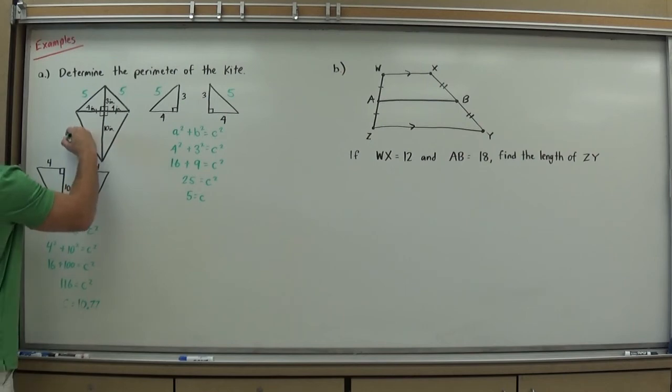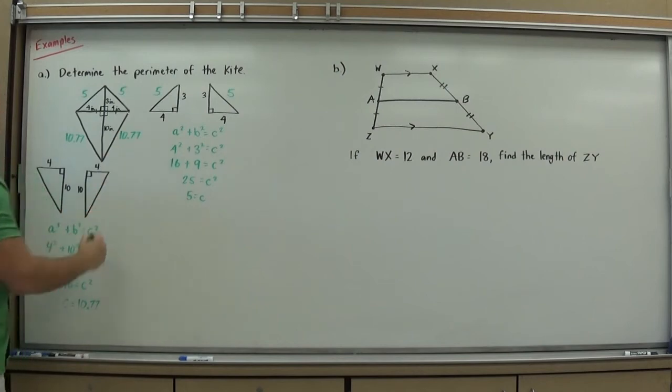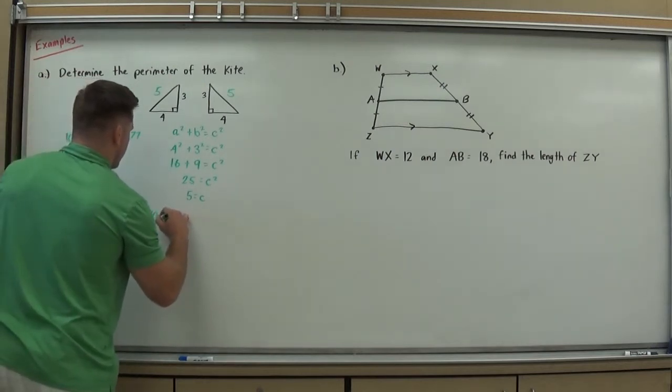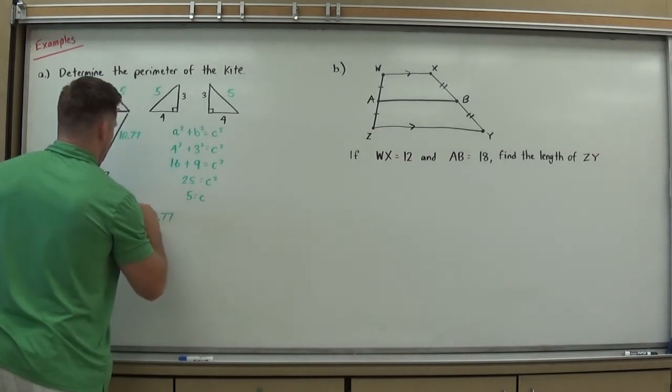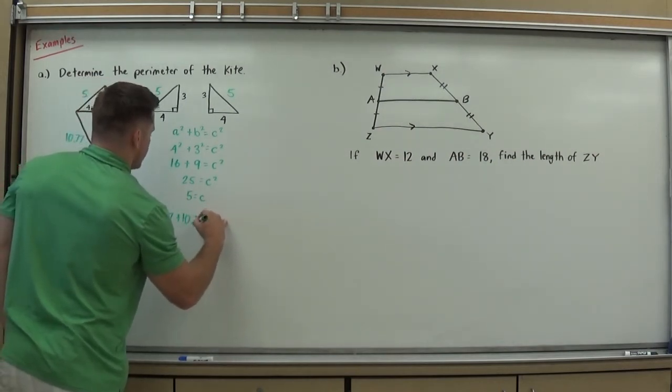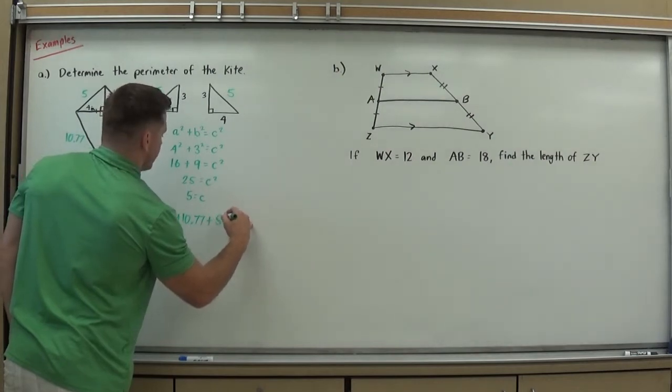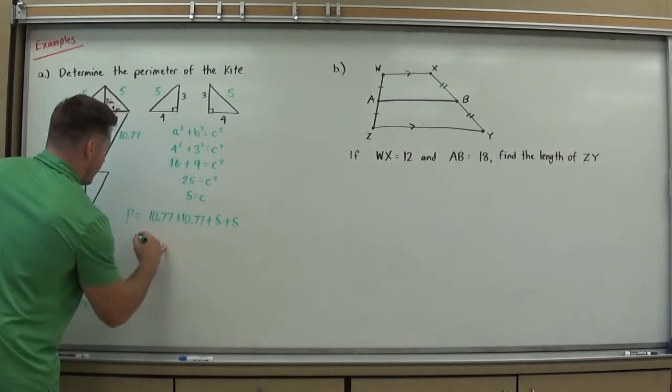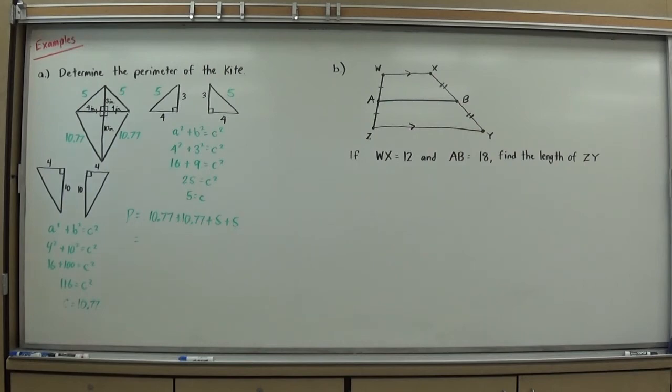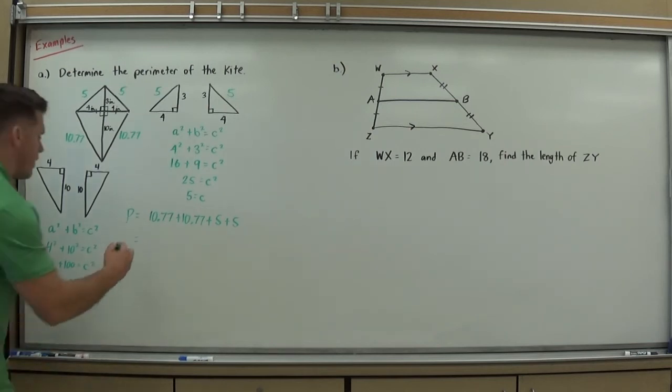So I now know that these two lengths here are ten point seven seven, and perimeter is the distance around the shape. So I have all the outside lengths now, and I don't use those inside lengths for perimeter. I can just add those together, and I will know my perimeter. Ten point seven seven plus ten point seven seven plus five plus five. Add those together real quick, times two plus ten more is thirty one point five four.